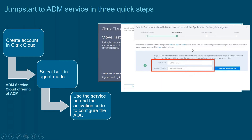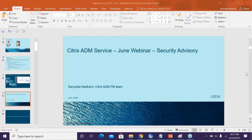The service URL and the activation code are available on the ADM Service GUI, which you can copy and pass as a parameter to the script. Sankta will cover in more detail what the CVE is and how you can identify and remediate it.